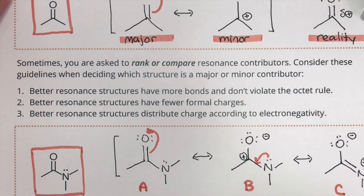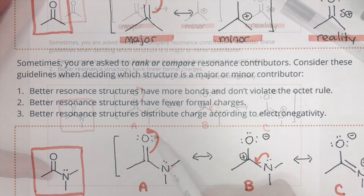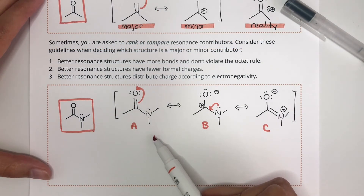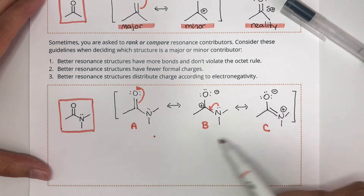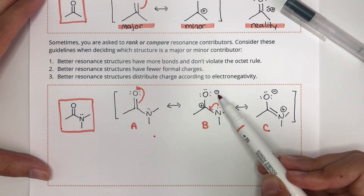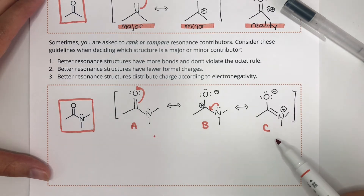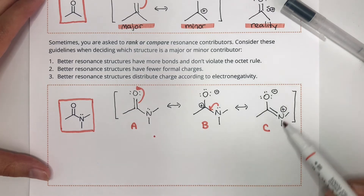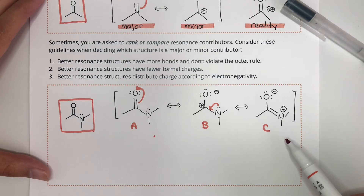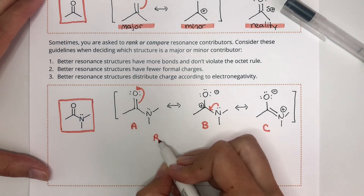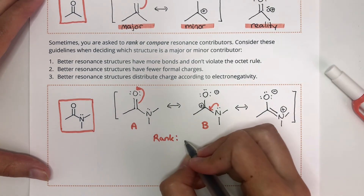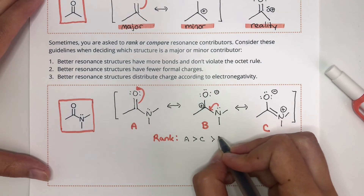Let's look at the guidelines that help us rank our resonance structures. Better resonance structures have more bonds and don't violate the octet rule. Better resonance structures have fewer formal charges, and better resonance structures distribute charge according to electronegativity. Structure A has no separated formal charges and all atoms have full octets — it's a good resonance structure. Structure B has formal charges and a carbon atom with an incomplete octet. Structure C has separated formal charges but no incomplete octets because of the double bond between nitrogen and carbon. Ranking from best to worst: A is the best, C is next, and B is the worst.